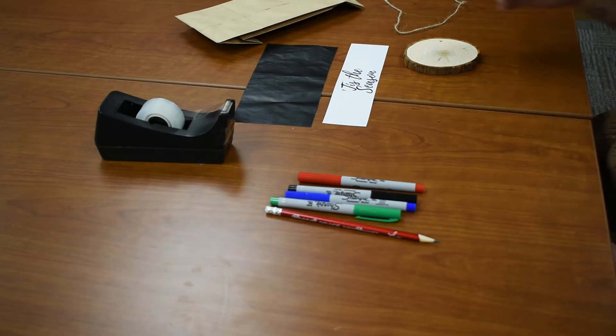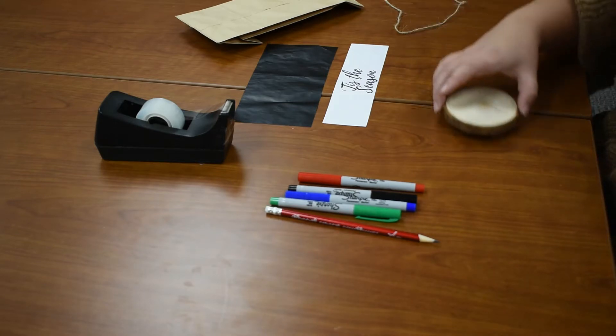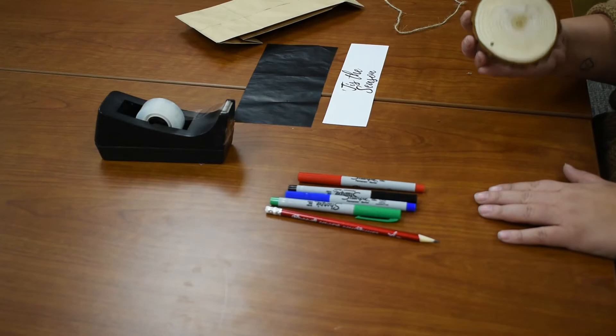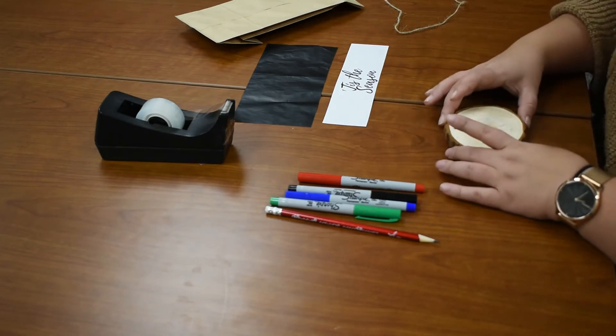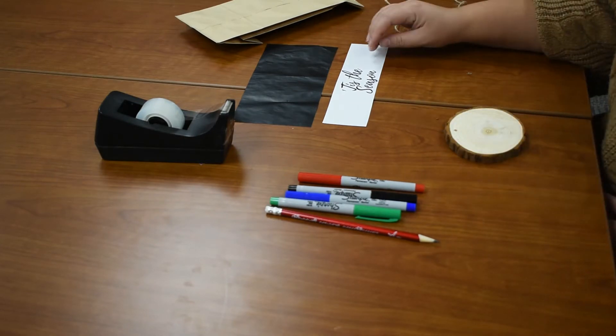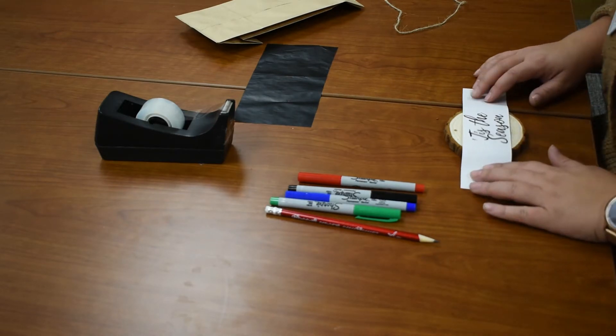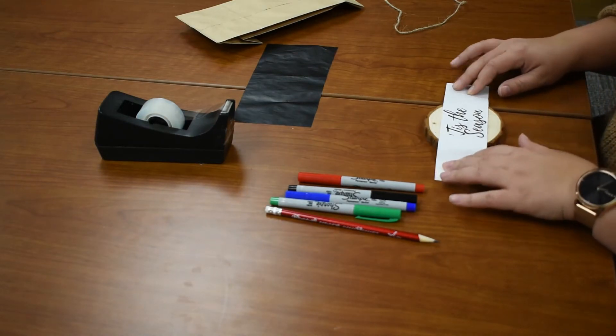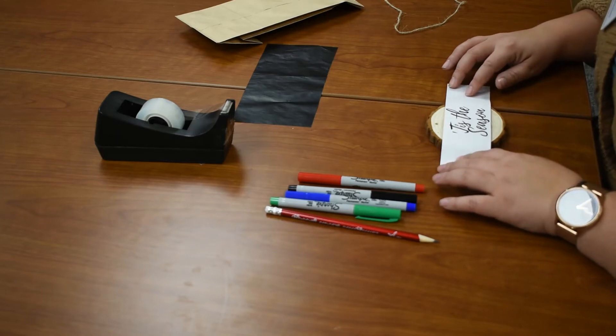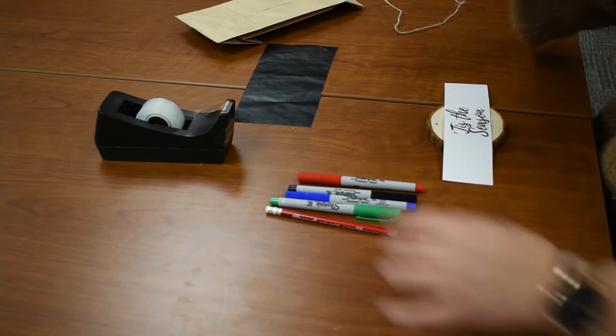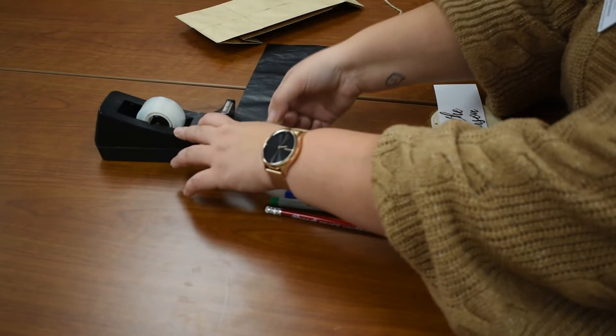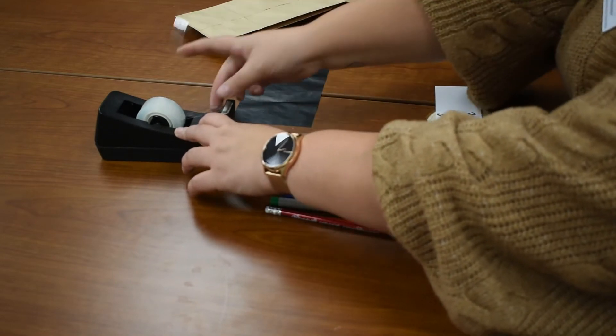So first thing first, I would grab your wooden piece and decide what side you want your stencil on. I would line it up where you want it and then I would tape that down, not too tight, but tight enough that it won't move around.